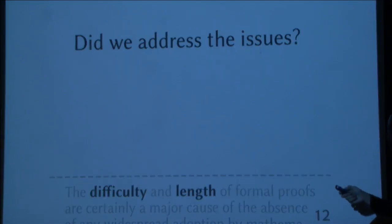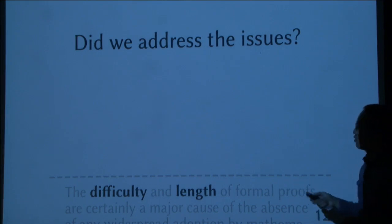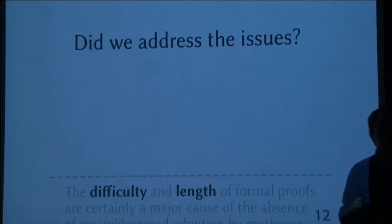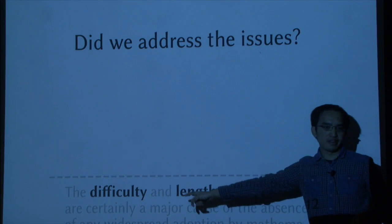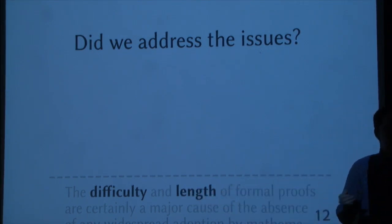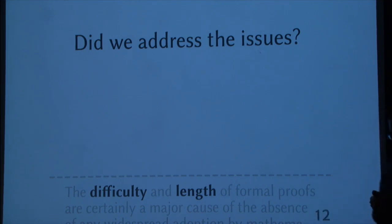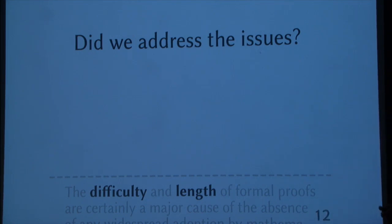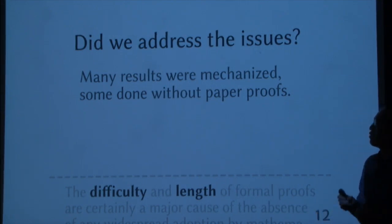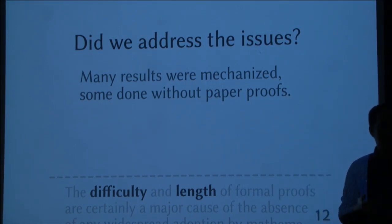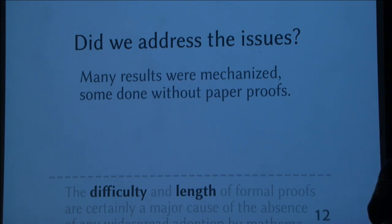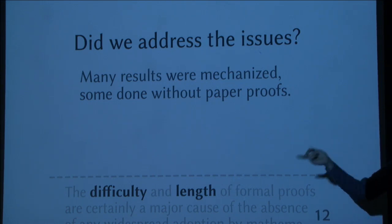So I only have five minutes. So did we really address the issues? Remember that the difficulty, according to the book, is that it seems very difficult and the formal proof seems very long. I don't have a very direct evidence. But what we saw is that many results were mechanized. Like we managed to do that even more. Some of them are actually done right in the computer first.